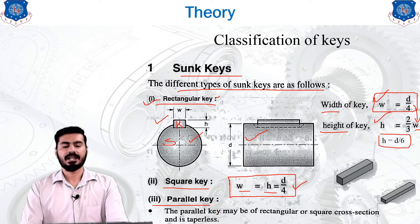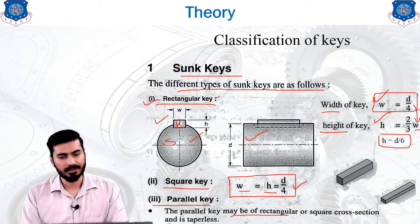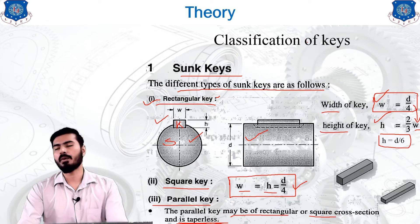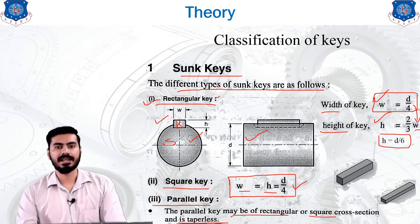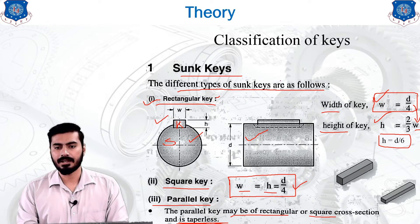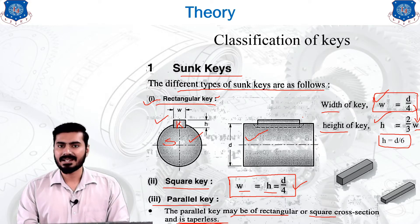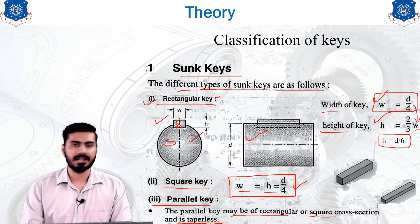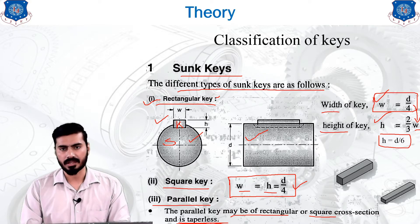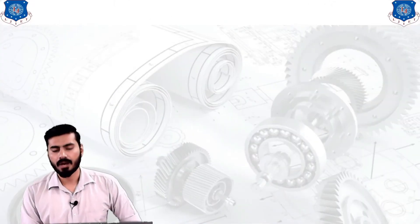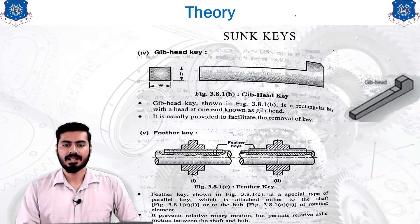Another type of sunk key is the parallel key. The parallel key may be of rectangular or square cross section, but it is compulsorily taper-less. The rectangular and square keys above may have a taper throughout their length, but if you use a parallel key, you must provide a taper-less key regardless of its cross section shape.